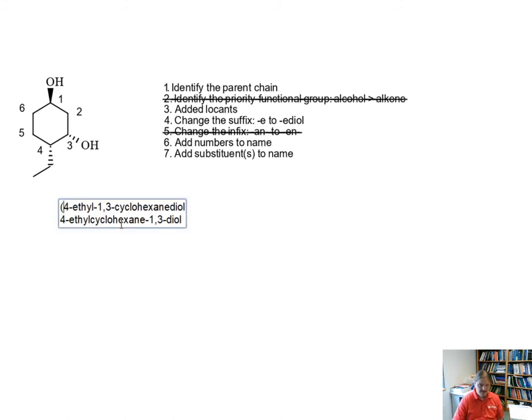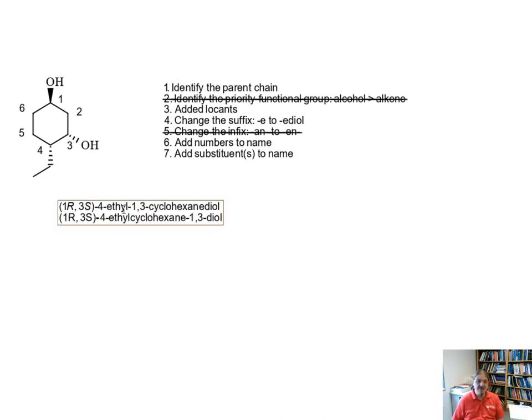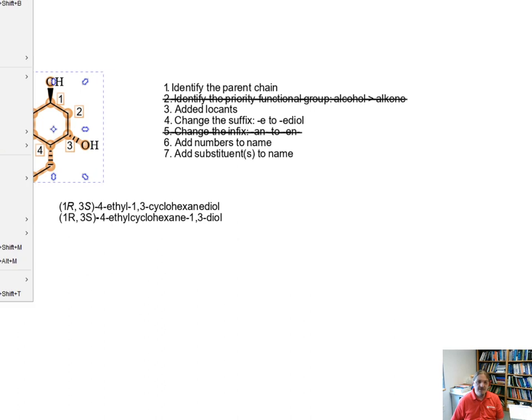And then the final thing that we need to do is to put the stereochemical descriptors at the front and it is R at carbon one and it is going to be S at carbon three and I'm doing this quickly so I am going to double check. Since I'm in software that can do this quickly for me I'm going to double check myself because this one is a little bit more complicated and I am feeling a little bit self-conscious for doing it so fast.